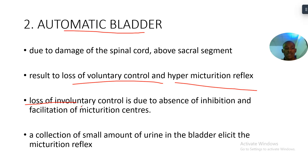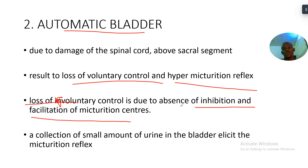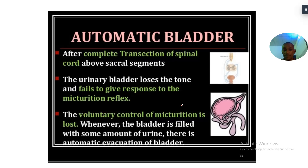Loss of voluntary control is due to the absence of inhibition and facilitation of the micturition centers. A collection of small amounts of urine will elicit the micturition reflex. Once small amounts of urine enter the bladder, the micturition reflex is triggered automatically.